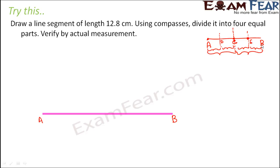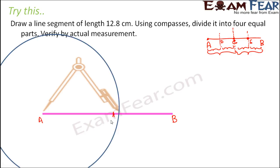So even though it might sound complex, it is very simple. You just need to remember the steps to draw a perpendicular bisector. So let's start. Let's draw a perpendicular bisector of AB. Consider A as the center and radius slightly greater than half AB. Take slightly more radius and draw a circle.